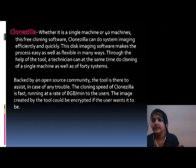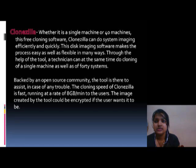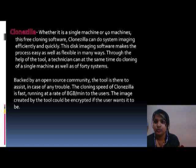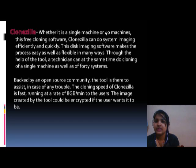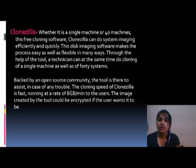The fifth software is Cloning Chilla. Whether it is a single machine or 14 machines, this free cloning software can do system imaging efficiently and quickly. This imaging software makes the process easy as well as flexible through the help of its tools. A technician can at the same time do cloning of a single machine as well as a multi-system setup, backed by an open source community. The tool is there to assist in case of any trouble. The cloning speed is fast, running at a rate of 8 GB per minute. The image created by the tool can be encrypted if the user wants.